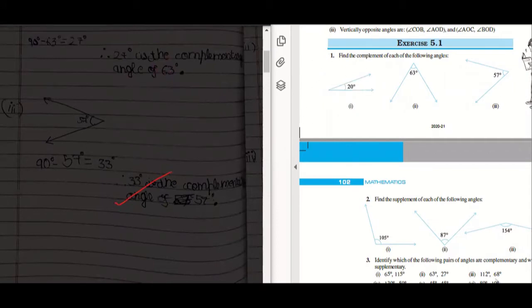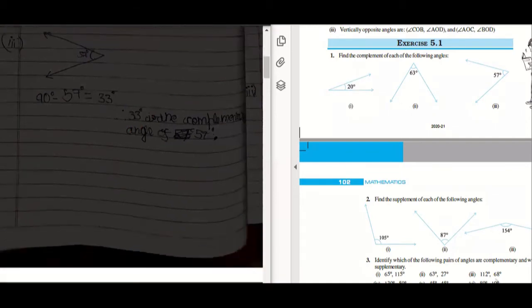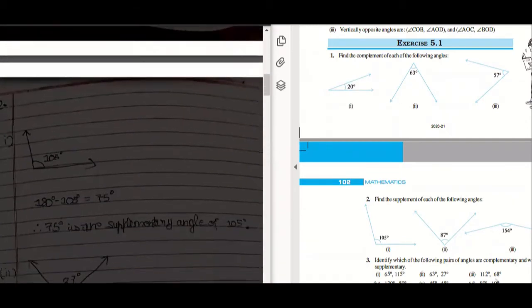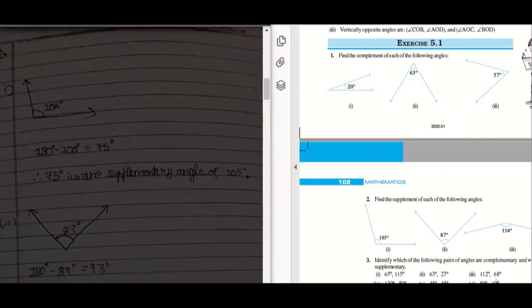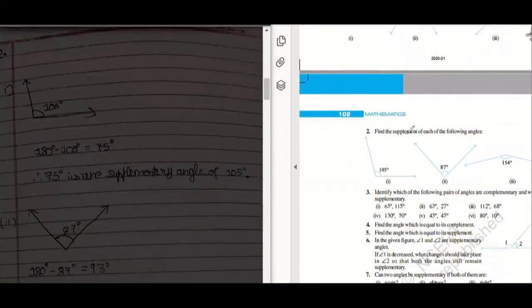Question number two is find the supplement. Supplement means sum of two angles is 180. That means if I extend this line, what will be the value of this angle?